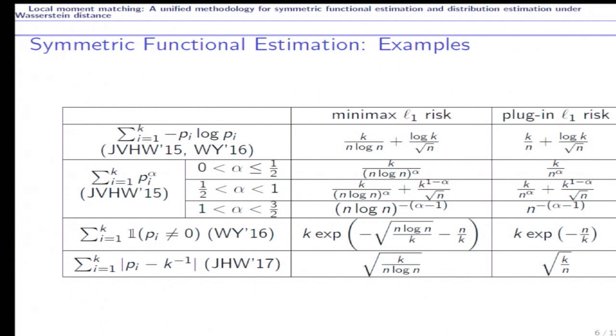Let's see the following table. The first column is about the function to be estimated. The second column is the minimax L1 risk. And the third column is the L1 risk obtained by plug-in the empirical distribution. As we can see, when comparing the second column and the third column, plug-in the empirical distribution is strictly suboptimal, up to a log factor.